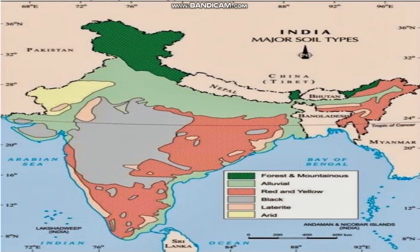Next is laterite soil. The light pink color you are looking at on the map — this is laterite soil. It is found over the hill slopes of the peninsular plateau and this soil is found in regions of heavy rainfall.